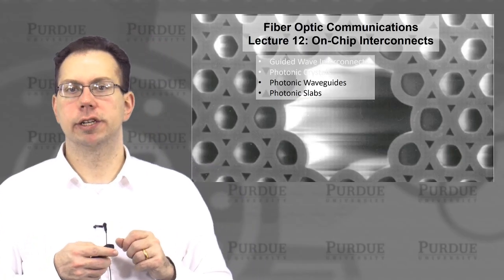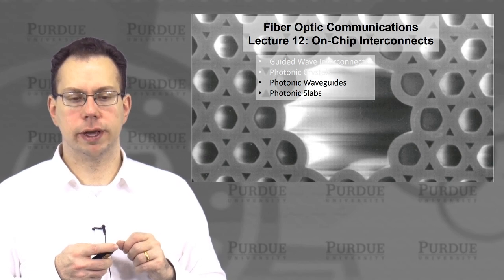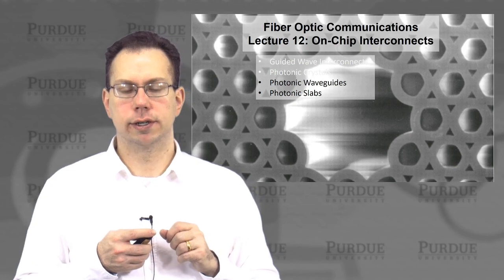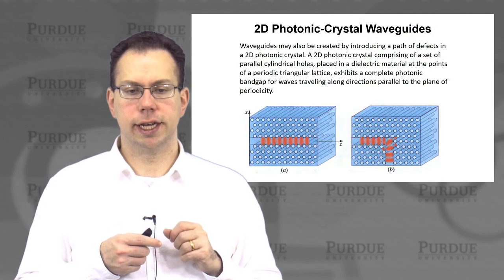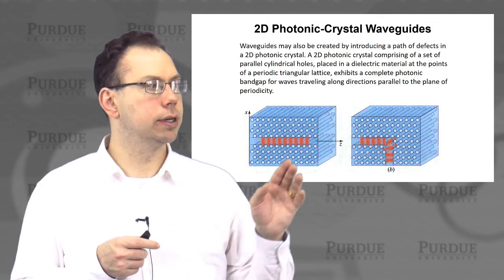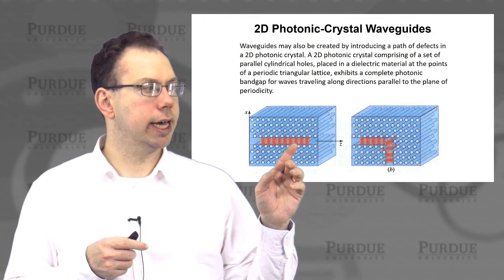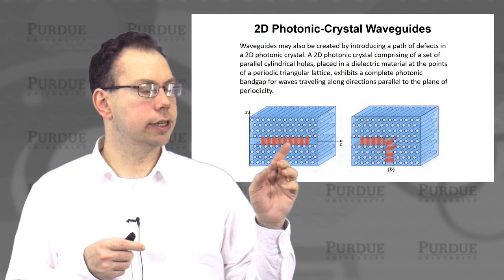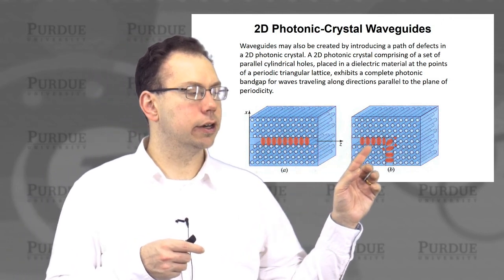The next topic is applying photonic crystals to designing waveguides, which are a critical application for telecommunications. The strategy with 2D photonic crystal waveguides is in principle very simple. You essentially have a waveguide established in a 2D photonic crystal, which can be straight, but you're not restricted to go straight.